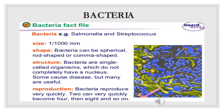First of all, we will discuss bacteria. Bacteria — for example, Salmonella and Streptococcus. The size of a bacterium is about 0.001 mm. The shape of bacteria can be spherical, rod-shaped, or comma-shaped. The structure of bacteria: they are single-celled organisms which do not completely have a nucleus.